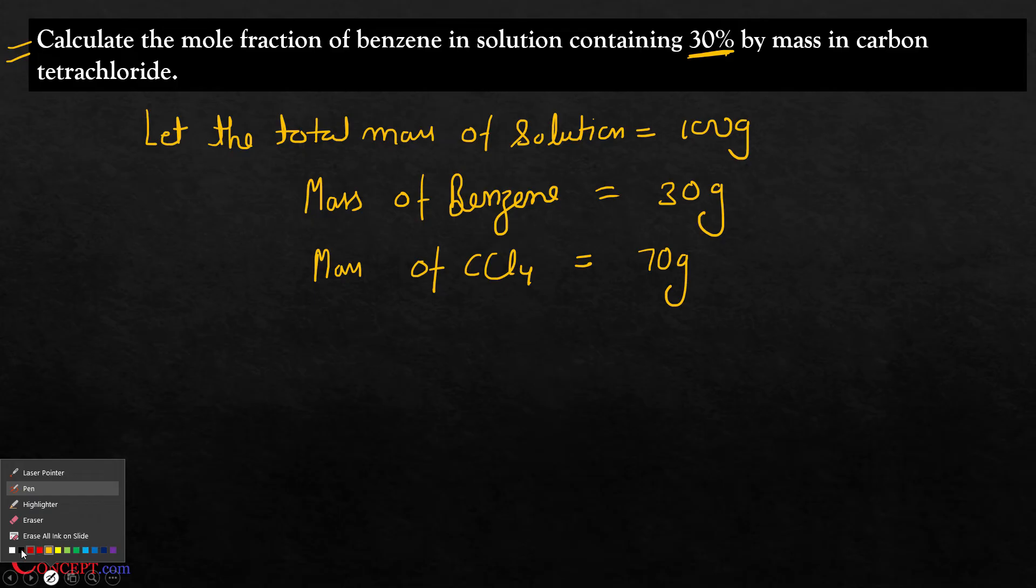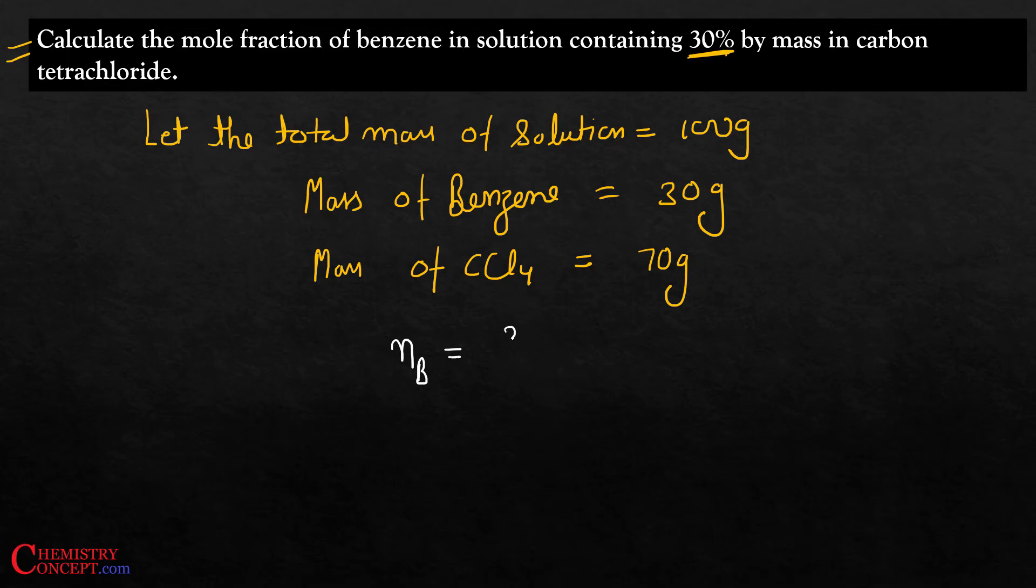For calculating the mole fraction, we need number of moles. So number of moles of benzene will be the mass of benzene upon molar mass of benzene. Molar mass of benzene is 78. When we divide, we get 0.385 moles.